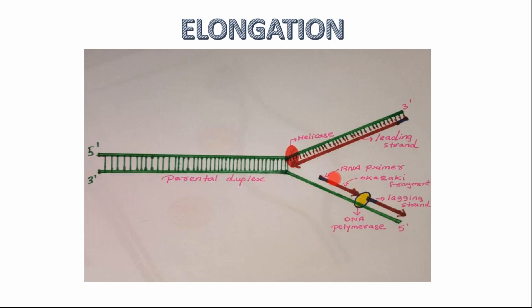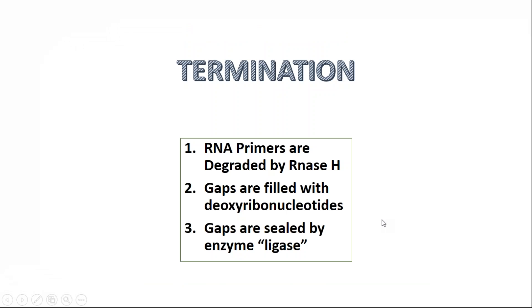After the new strands have been synthesized, the RNA primers have to be removed and the gaps sealed — this takes place in the termination phase. In termination, RNA primers are degraded by RNase H, the gaps are filled with deoxyribonucleotides, and the gaps are sealed by ligase. This is all about DNA replication.